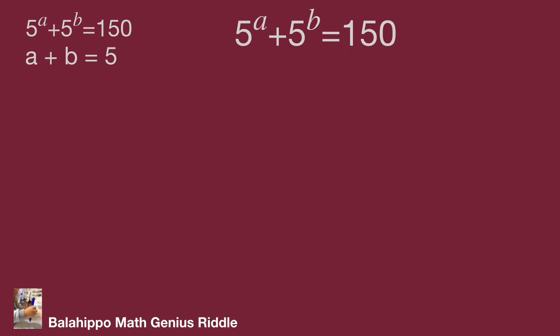First, take a look at these two given equations. We have a plus b equal to 5. How to make the connection from 5 power of a plus 5 power of b equal to 150? I'm going to multiply 5 power of a on both sides of these equations.